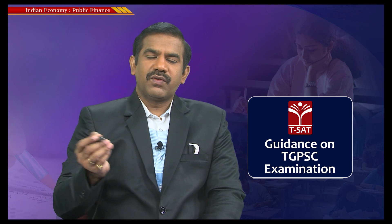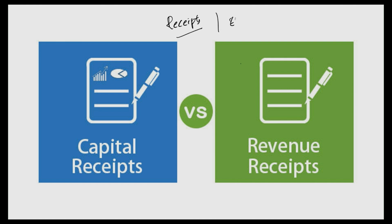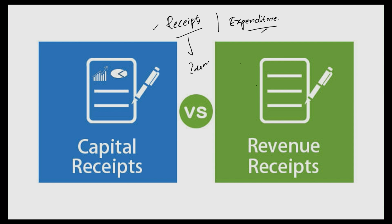Now let us understand the components of a budget. The Annual Financial Statement consists of receipts and expenditure. Receipts refer to all money that flows into the Consolidated Fund of India — whether in the form of tax revenue, disinvestment proceeds, or borrowings. It is important to note that receipts include both income and borrowings, not just income alone.